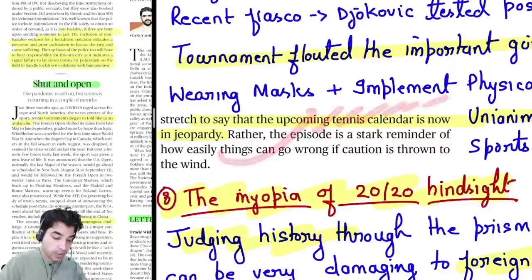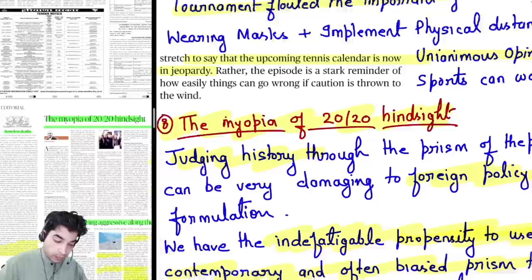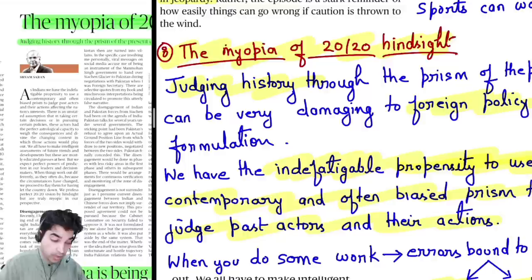The entire sports line-up has run into difficulty. The four grand slams in tennis have been named and placed in order: first comes one, then next, then next, then next — all facing disruption. This is the shut and open situation in tennis.